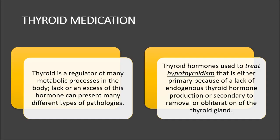Thyroid medication is used to regulate the metabolic processes in the body. Lack or excess of this hormone can present many different types of pathologies. Thyroid hormone is used to treat hypothyroidism, whether primary due to lack of endogenous thyroid hormone production, or secondary to removal or obliteration of the thyroid gland.